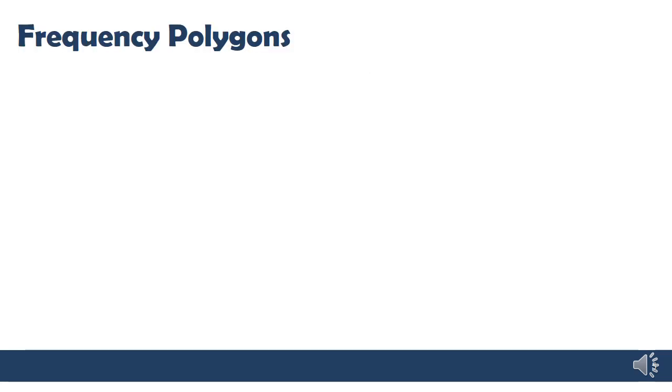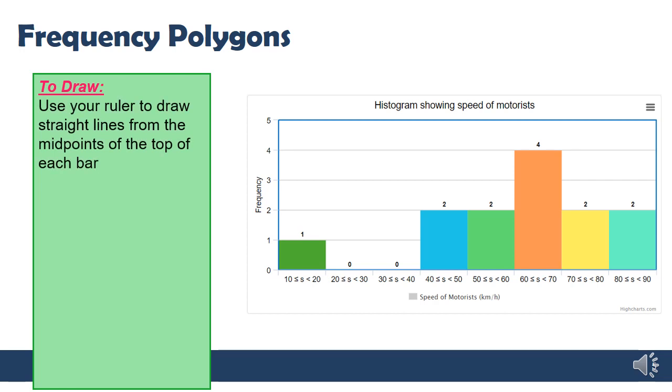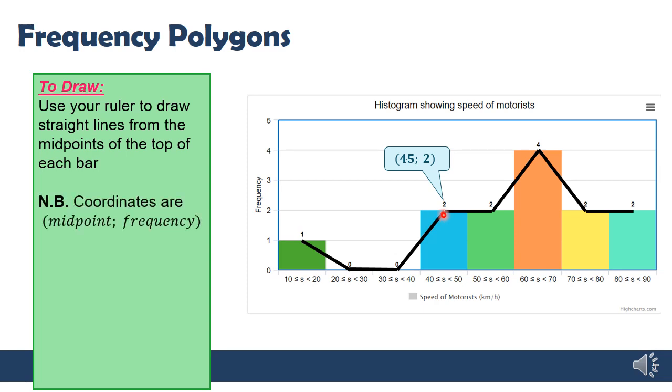Drawing a frequency polygon is really simple. We're going to start from our histogram and all you're going to do is use your ruler to draw a line from the midpoint of each bar, so from the top of the bar, the middle of the top, to the middle of the next bar. Then from this midpoint to the next midpoint, and so forth, connecting all the midpoints of the tops of the bars. Now notice that the midpoint here is 45, so halfway between 40 and 50 is 45, so the x coordinate is 45 and the y coordinate is 2. So all of these points on our frequency polygon can be expressed as the midpoint of the x value and the y value is the frequency.